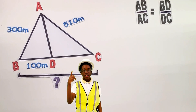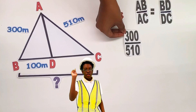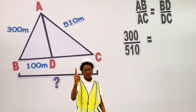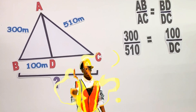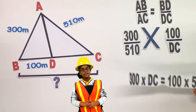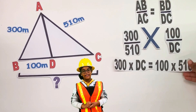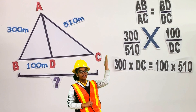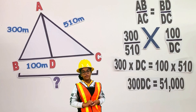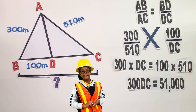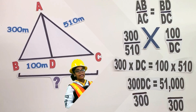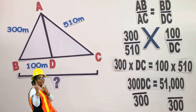Yes, because of that, we have the proportion: 300 over 510 equals 100 over DC. Cross multiply: 300 times DC is equal to 100 times 510. 300 DC is equal to 51,000. Isolate DC by dividing both sides by 300. DC is equal to 170.